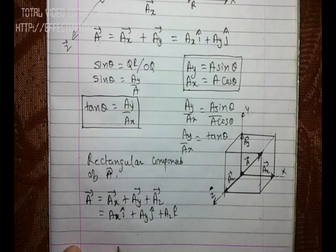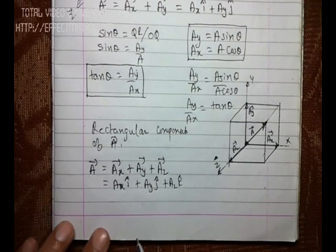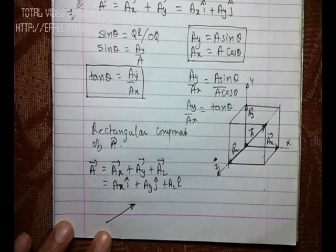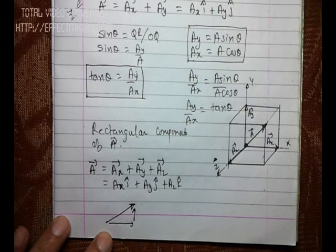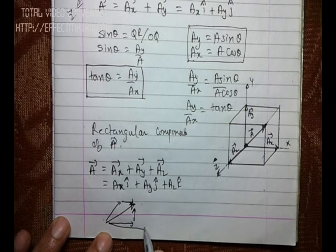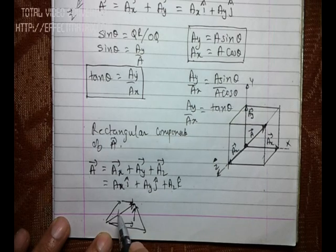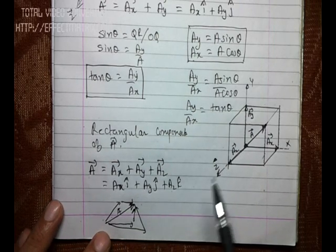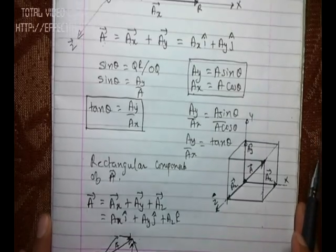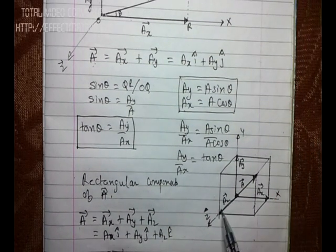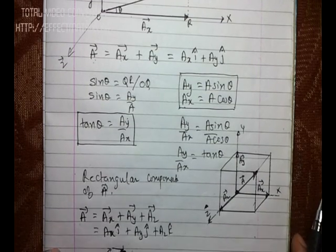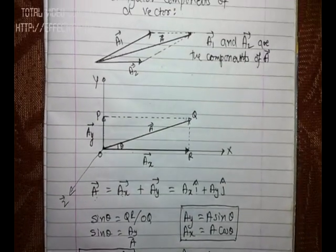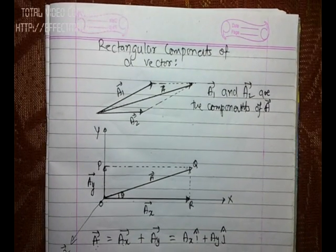As you already know, vector a can have an infinite number of components. If I take any vector, it can have a large variety of components depending on the directions chosen. But the components which are on the x, y, and z axes are specifically known as the rectangular components of vector a. I hope this has clarified doubts about rectangular components of a vector. Thank you.